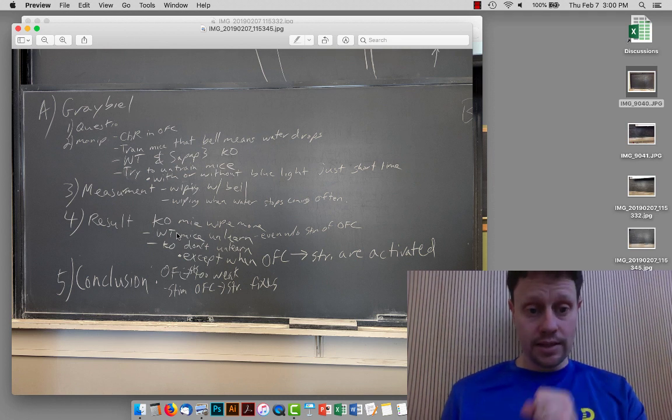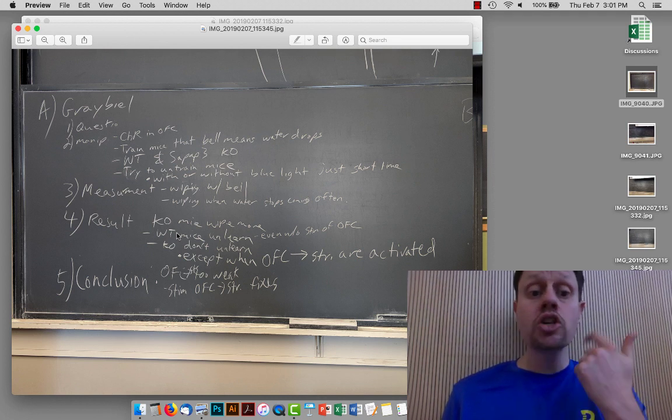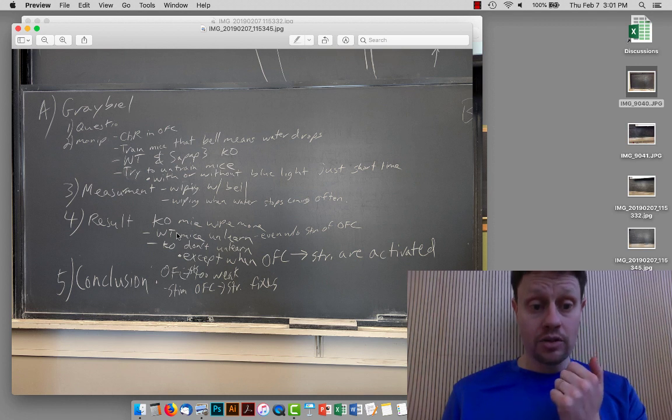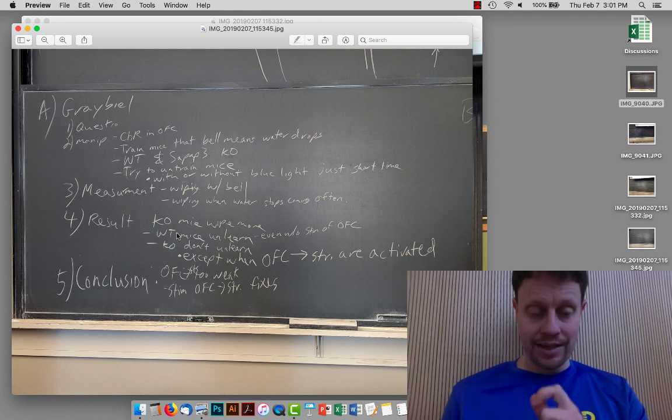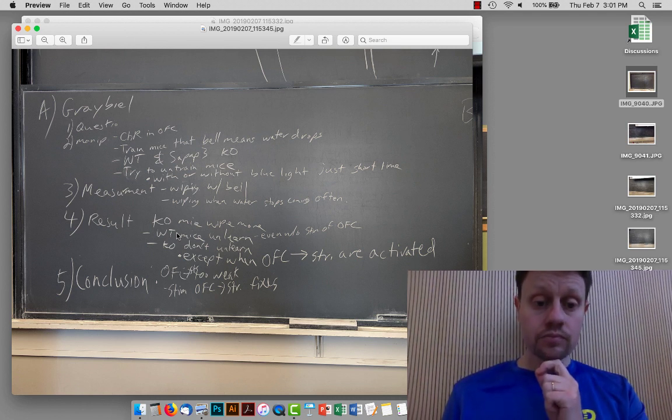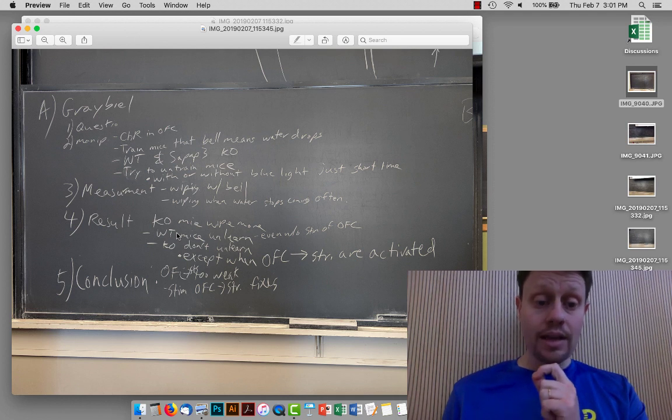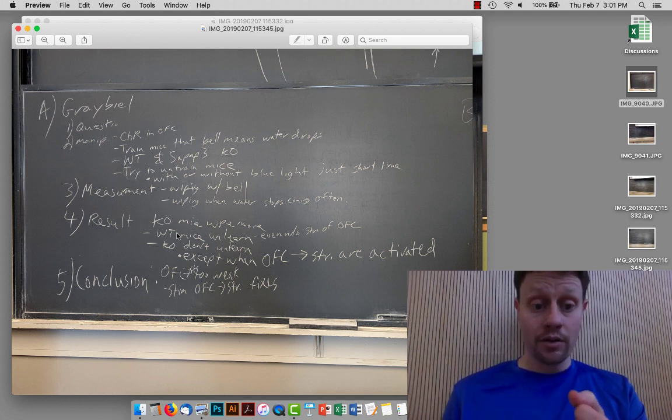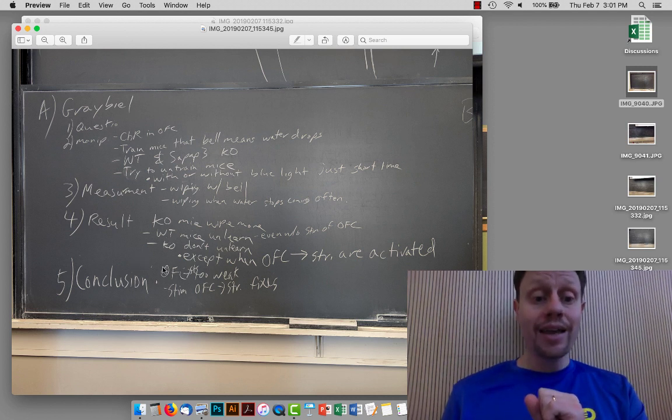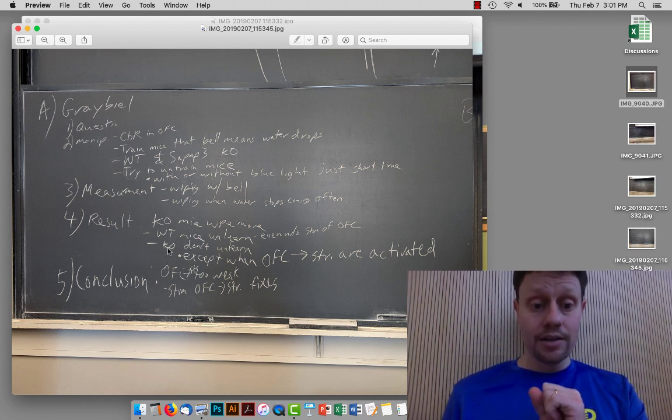What they found is when they tried to untrain the mice, so they made it so that the bell very rarely signaled a water drop, the wild-type mice quickly unlearned. The knockout mice, however, do not unlearn.